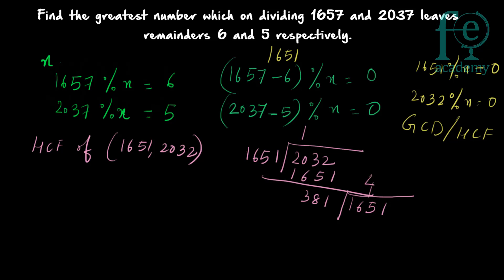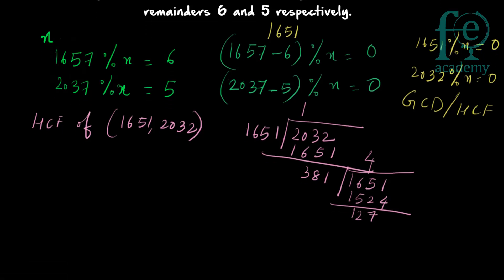The quotient is 4. The remainder is: 381 × 4 = 1524, and 1651 − 1524 = 127. So the remainder is 127. Now 127 becomes the new divisor, and the previous divisor 381 becomes the new dividend. Each time, the remainder becomes the new divisor and the previous divisor becomes the new dividend.